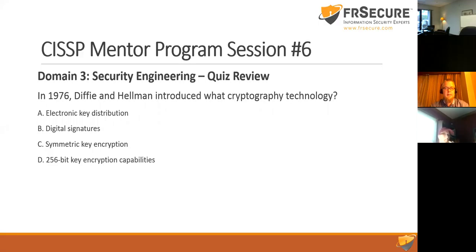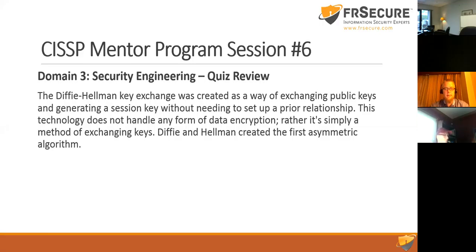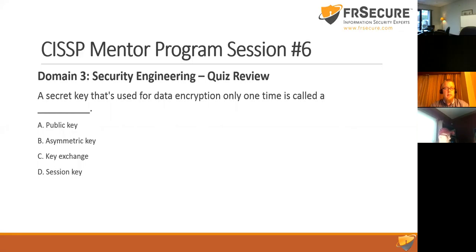Question eleven: In 1976, Diffie and Hellman introduced what cryptography technology? Options: electronic key distribution, digital signatures, symmetric key encryption, or 256-bit key encryption. The correct answer is A — electronic key distribution was the primary purpose of Diffie-Hellman.